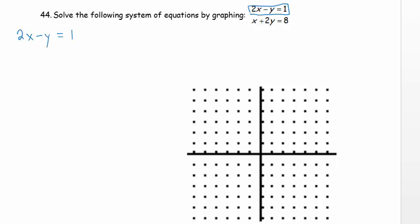Let's start with this line. Let's find its intercepts. For the x-intercept, we set y equal to 0. We have 2x equals 1. Dividing both sides by 2, we get x equals 1 half. That makes the x-intercept 1 half comma 0.